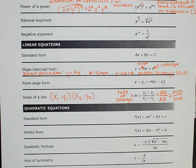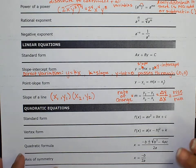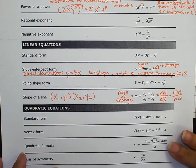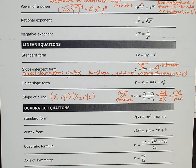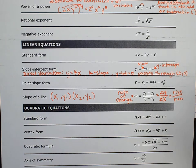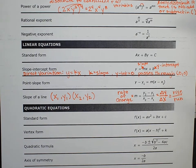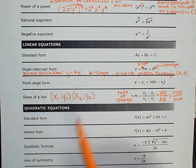There are a couple more things before we move on to quadratics. Parallel lines have the same slopes and perpendicular lines have opposite reciprocal slopes — we're going to add that in. We're kind of running out of room here, so we're going to use the back of the paper for that. The other thing I want to talk about is domain and range.